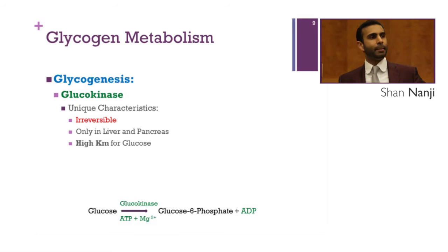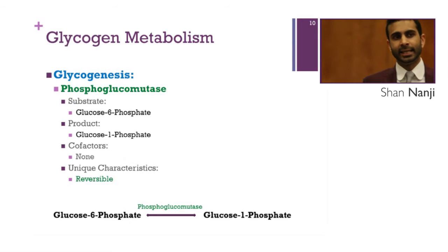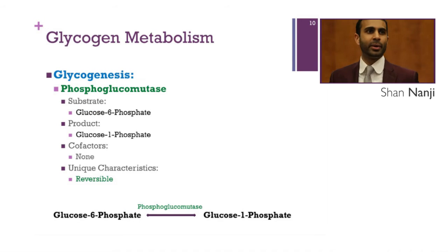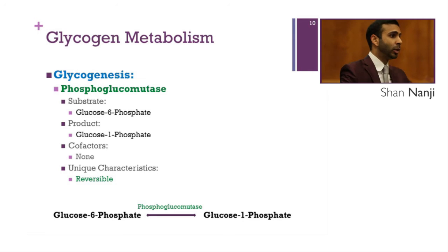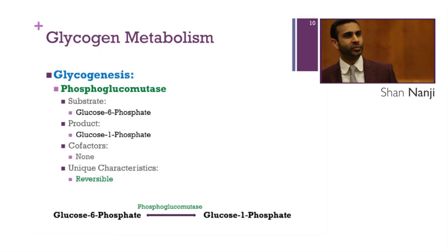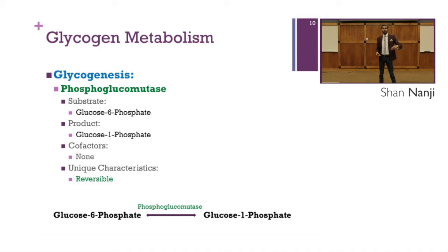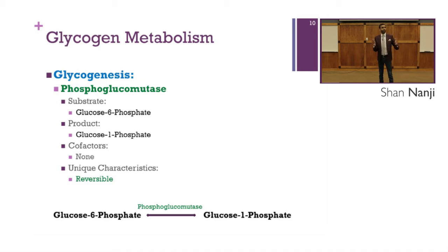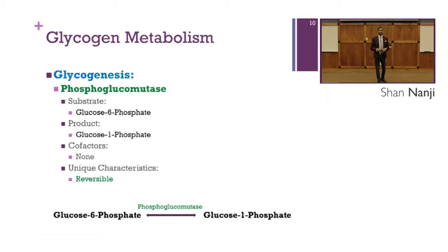The next enzyme is phosphoglucomutase. The substrate is glucose-6-phosphate and the product is glucose-1-phosphate. There are no cofactors, and unlike the previous two enzymes which were irreversible, this reaction is reversible.